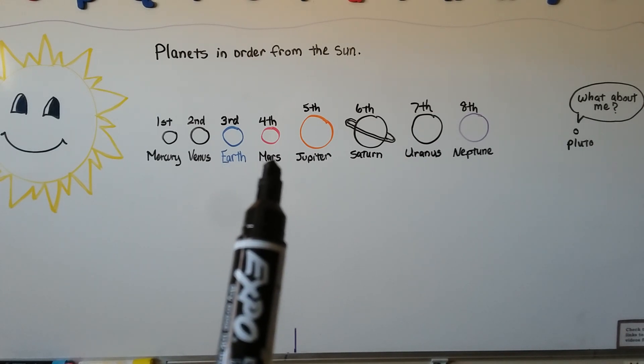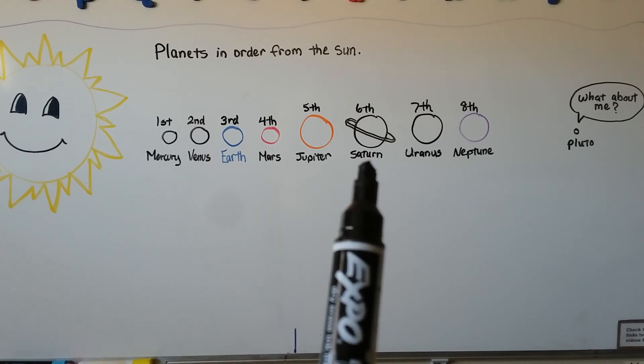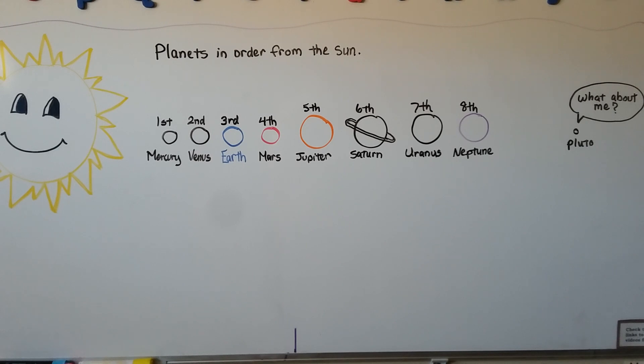Mars is the fourth planet from the sun. Saturn is the sixth. We don't count Pluto anymore, do we?